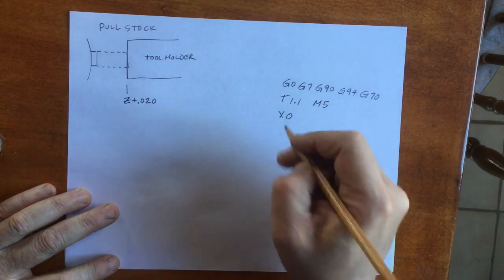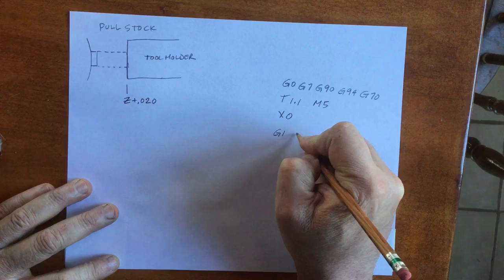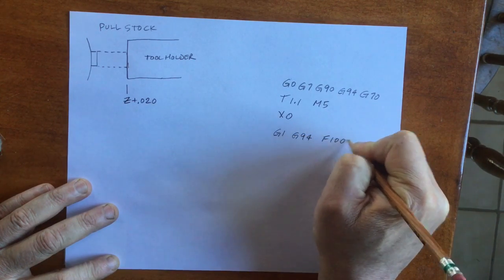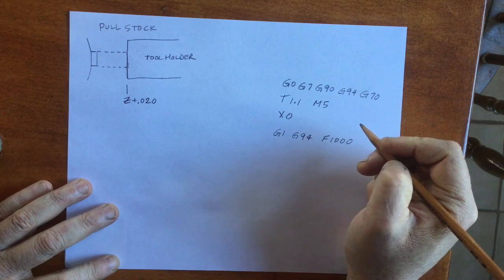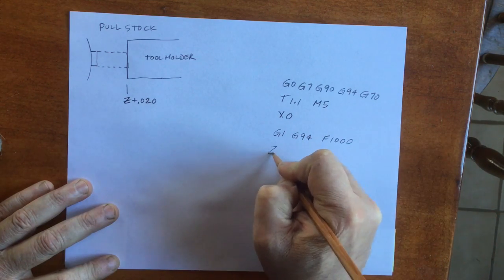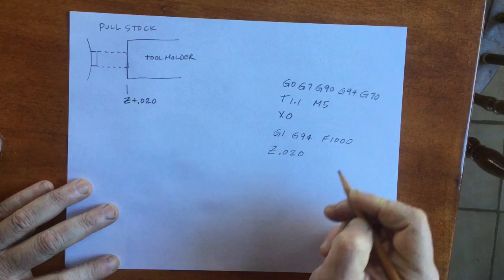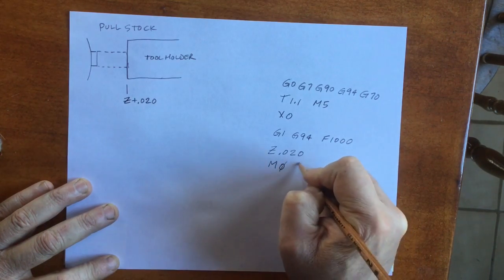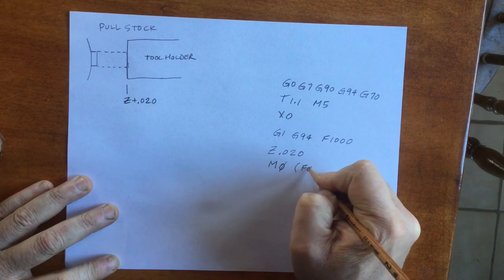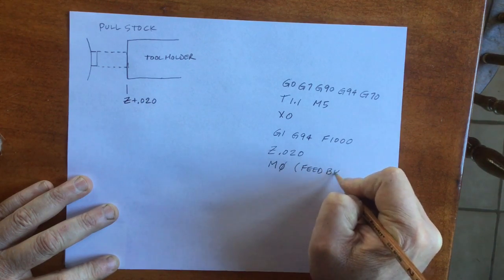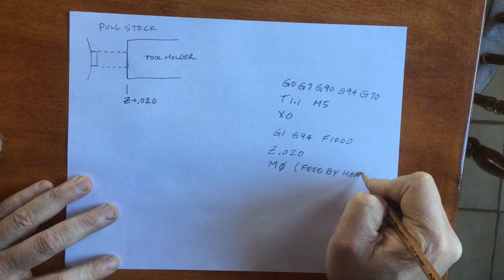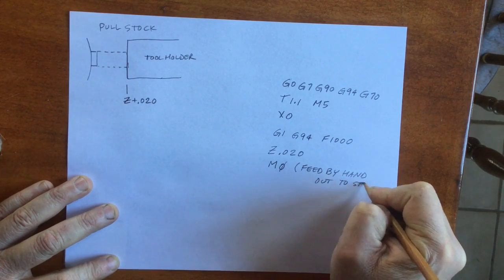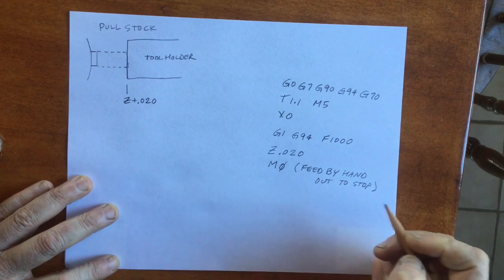First tool, we're going to pull the stock by hand. We use G94, which is feed rate in inches per minute. We'll declare a feed rate of 1000, which means 100 feet per minute. At M0, the machine will stop the program, wait for the operator to open the collet, advance the stock by hand, and close the collet again. When the operator's got his hands out of the way, hit cycle start and the program continues.